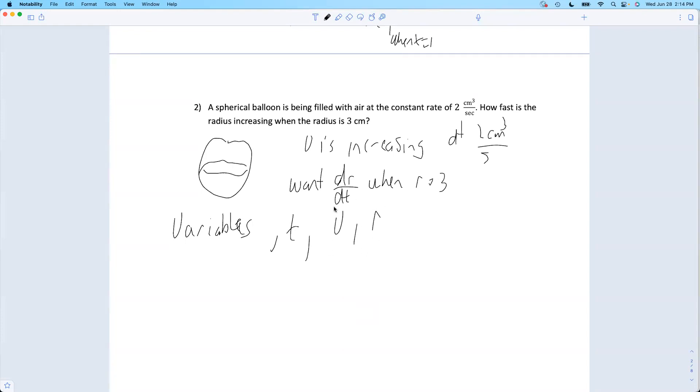I need some equation that relates my variables. What's the volume of the sphere? V equals 4/3 π r cubed. I've now related, remember, these are called related rates. I've related my variables.